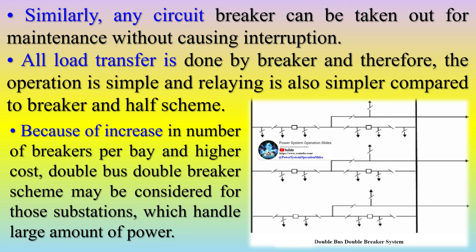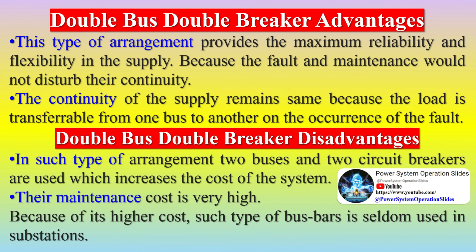Advantages of the double bus double breaker arrangement: it provides maximum reliability and flexibility in supply, as faults and maintenance do not disturb continuity. The continuity of supply remains the same because the load is transferable from one bus to another on the occurrence of a fault. Disadvantages: two buses and two circuit breakers are used which increases the cost of the system, maintenance cost is very high, and because of its higher cost, such type of busbar is seldom used in substations.